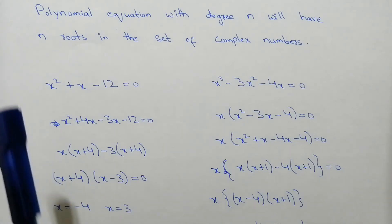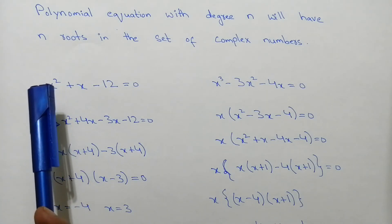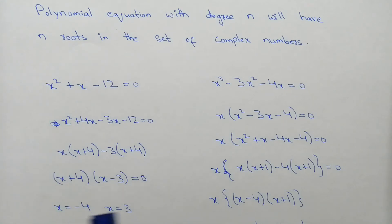Now notice one thing over here that we have the n roots, the highest degree we have is 2, and we have the 2 roots over here.